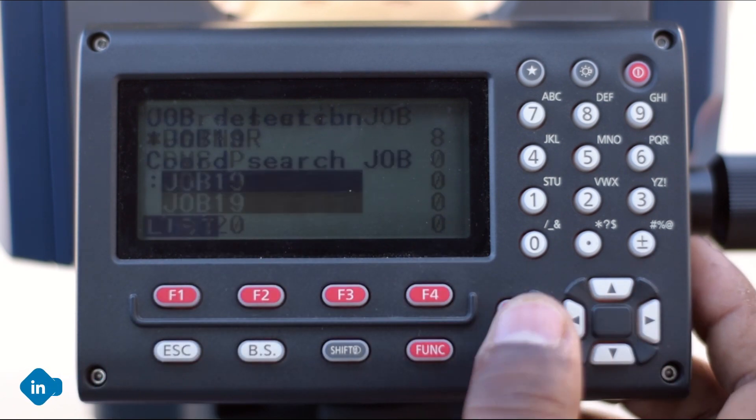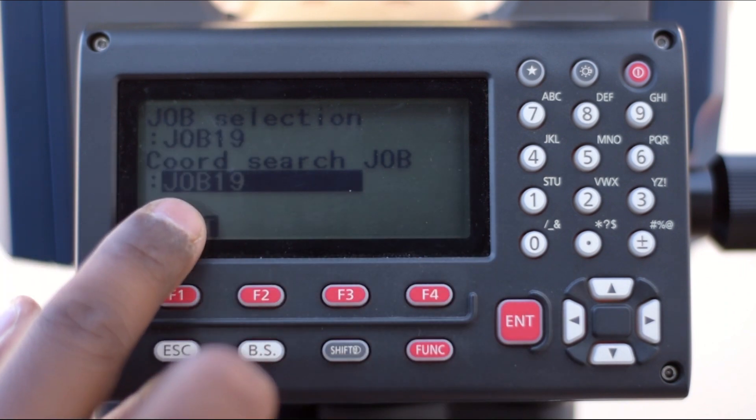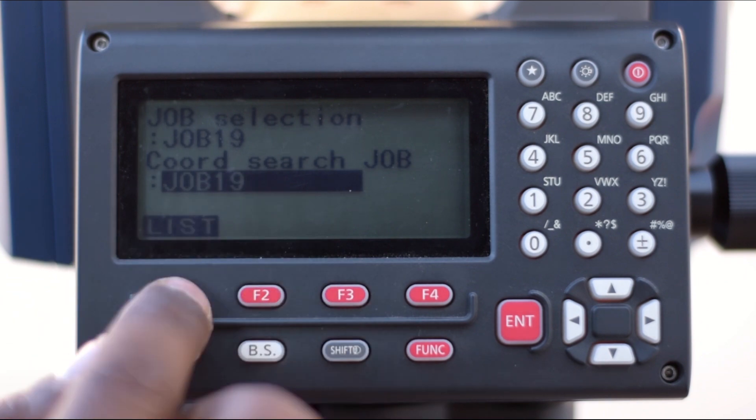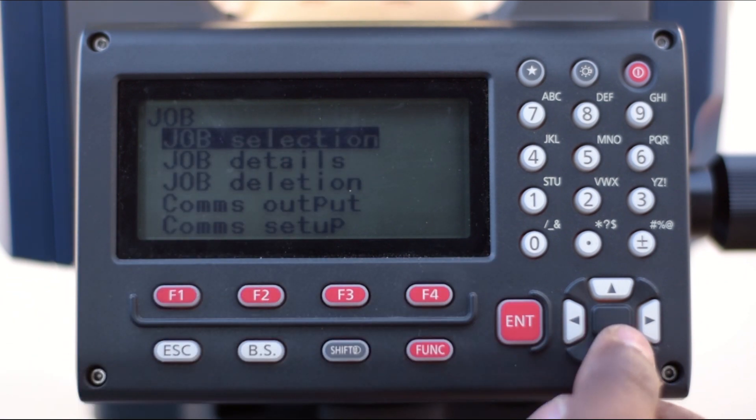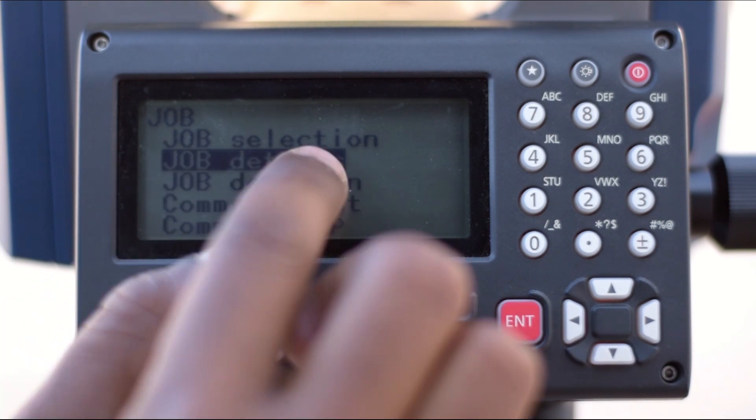In the Coordinate Job option, we'll also go to List, and then after the list appears, we'll also select Job 19, because in both these jobs—Job Selection and Coordinate Search Job—we need to have the same option.